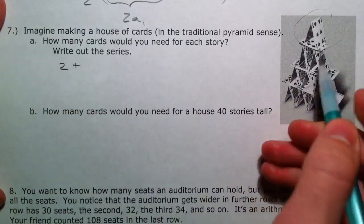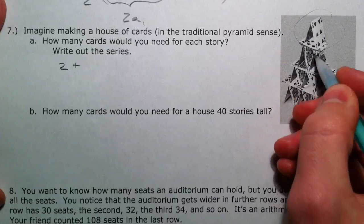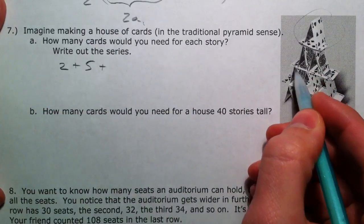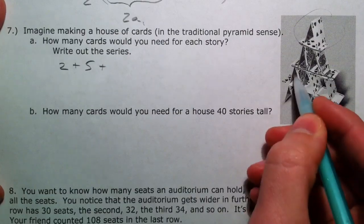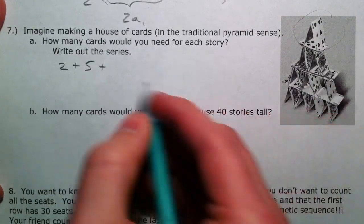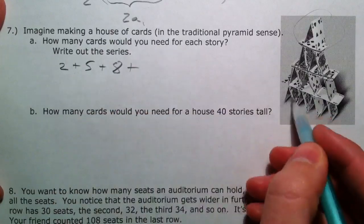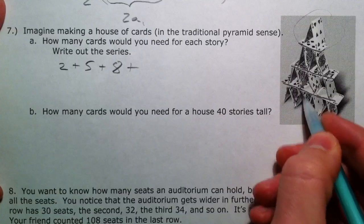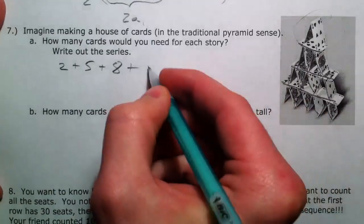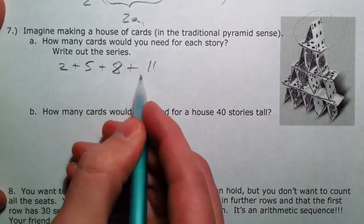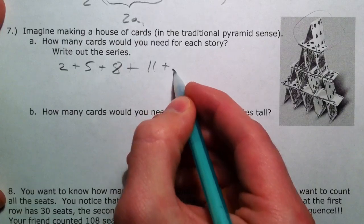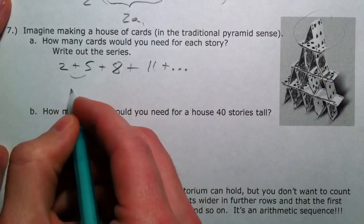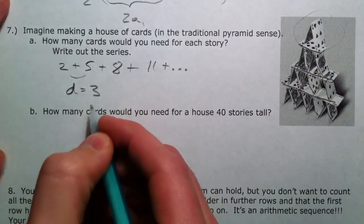If we add a second story, we have 8 cards. And then for the third story, 11 cards. And if you've noticed, this is an arithmetic series now because we're adding them together. Because it's plus 3. The common difference is 3.